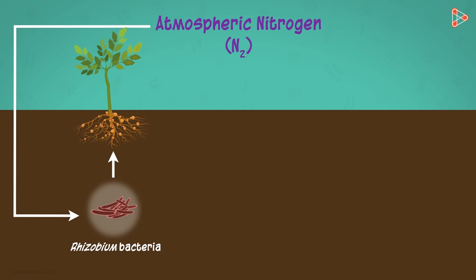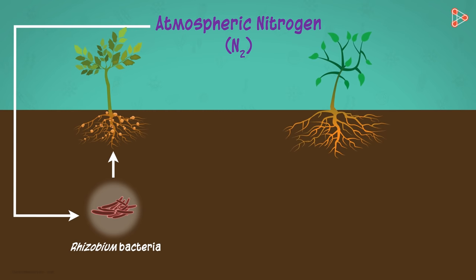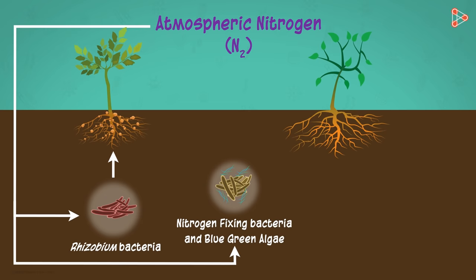But what about the non-leguminous plants? We don't need to worry. We have this second method. The nitrogen-fixing bacteria in the soil and the blue-green algae help in converting the atmospheric nitrogen into usable compounds.